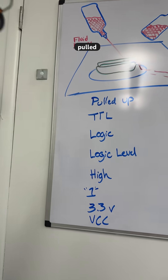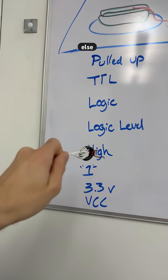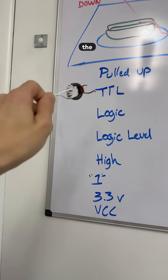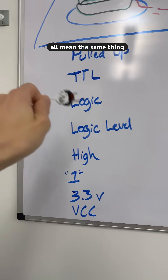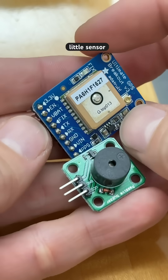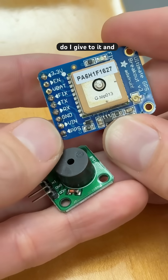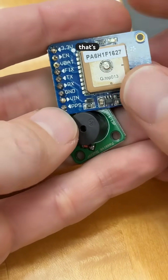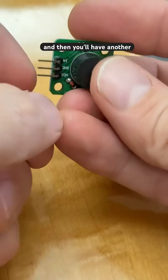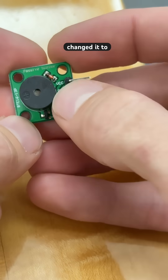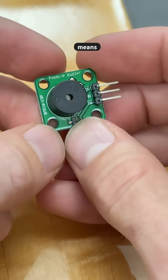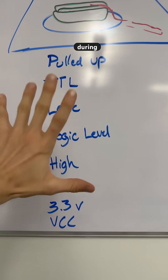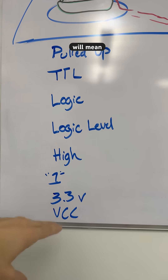The computer engineers all got together and pulled the nastiest trick on everyone else. Each of these terms are things you'll encounter while learning electronics, and they all mean the same thing. You purchase a cool little sensor and ask how much voltage do I give it — sometimes they call it VIN, that's where you provide your 3.3 volts. Then you'll have another one and it won't even say VIN anymore — they changed it to VCC, but that also means 3.3 volts. They keep changing it and are never consistent, and in many situations each of these will mean 3.3 volts.